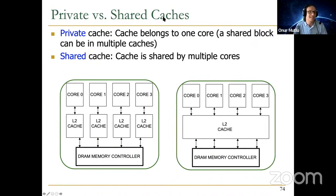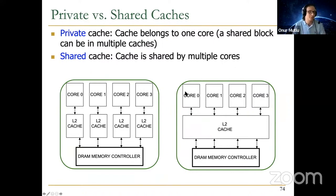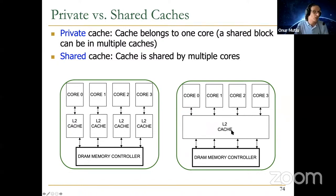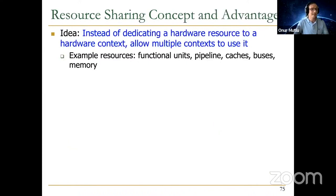Private versus shared cache — this is very similar to the instruction versus data decision. In a private cache, the cache belongs to one core or one thread. In a shared cache, the cache is shared by multiple cores. If caches are private, a shared block may be in multiple caches, creating a redundancy problem. Whereas if the cache is shared across many cores, a single memory block occupies only one location — that's one immediate advantage of a shared cache. But like everything, it's a trade-off.